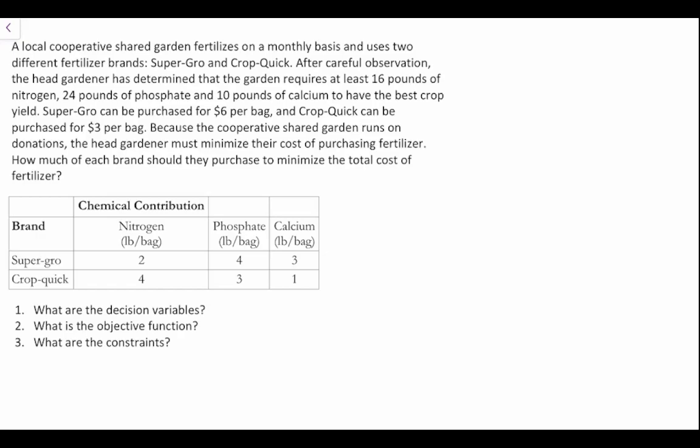We have this table here and we can look at it and see our chemical contribution and our brand. Super Grow has 2 pounds of nitrogen per bag, 4 pounds of phosphate, and 3 pounds of calcium. Whereas Crop Quick has 4 pounds of nitrogen, 3 pounds of phosphate, and 1 pound of calcium.